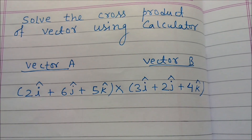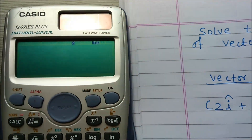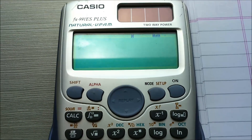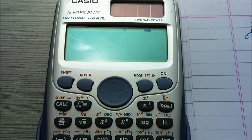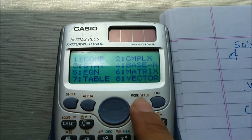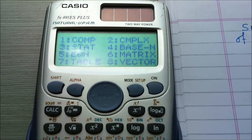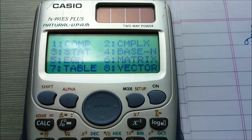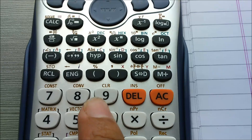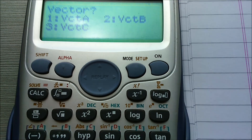We do the cross product of these two vectors using the calculator. In the calculator 991es plus, we do a few steps for doing the cross product of two vectors. First, we press the mode button and select the vector option. Vector is on number 8, so we press 8. When we press 8, the vector mode is selected in the calculator.